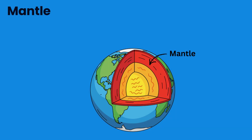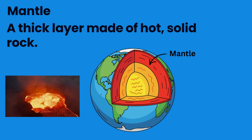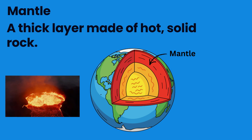The mantle is found underneath the crust. It's a thick layer of hot, solid rock. But the mantle isn't completely still — it slowly flows because of the heat rising from the earth's core. This slow movement helps drive the motion of the tectonic plates found above it.